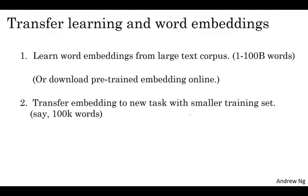One nice thing also about this is you can now use relatively lower dimensional feature vectors. So rather than using a 10,000 dimensional one-hot vector, you can now instead use maybe a 300 dimensional dense vector. Although the one-hot vector is sparse, the 300 dimensional vector that you might learn through embedding will be a dense vector.